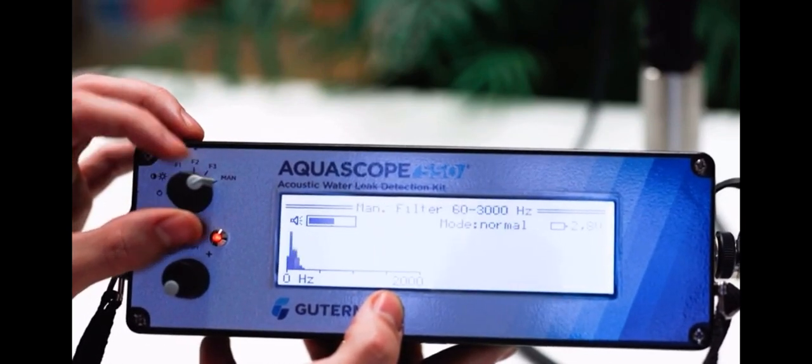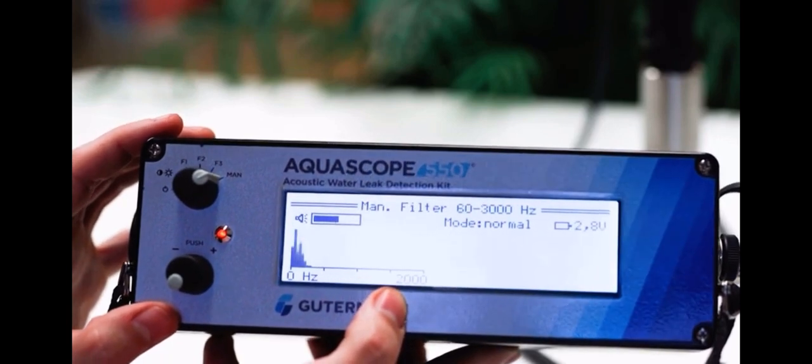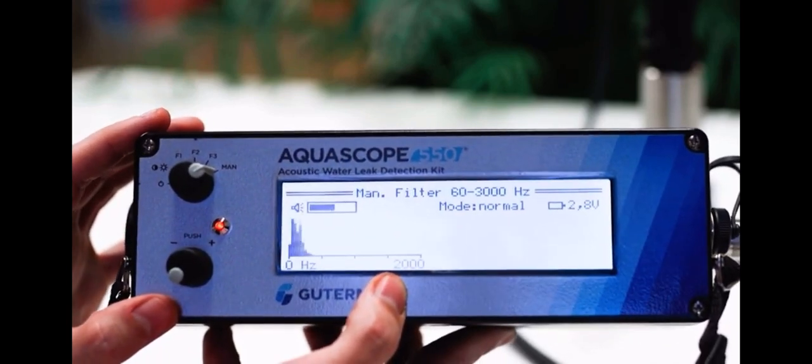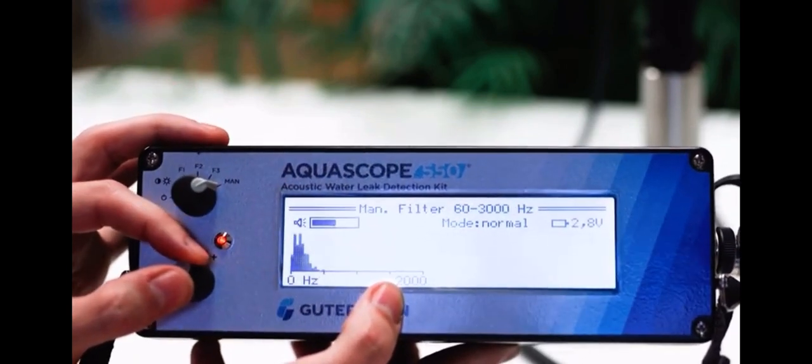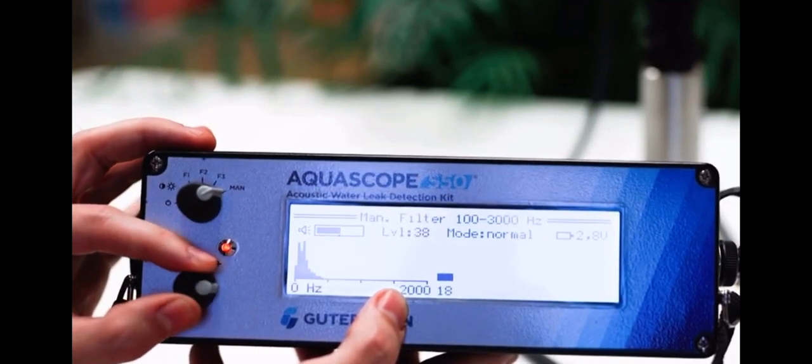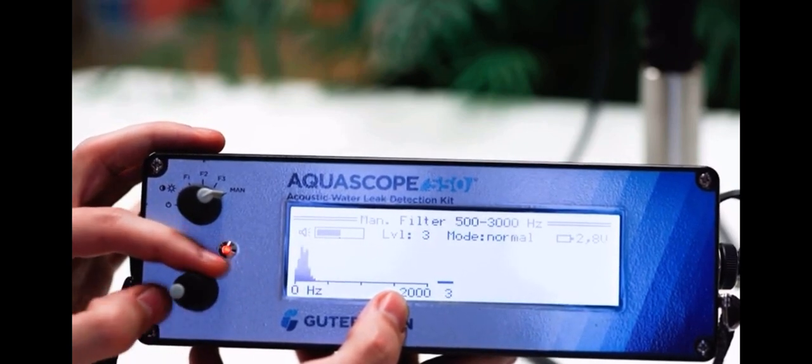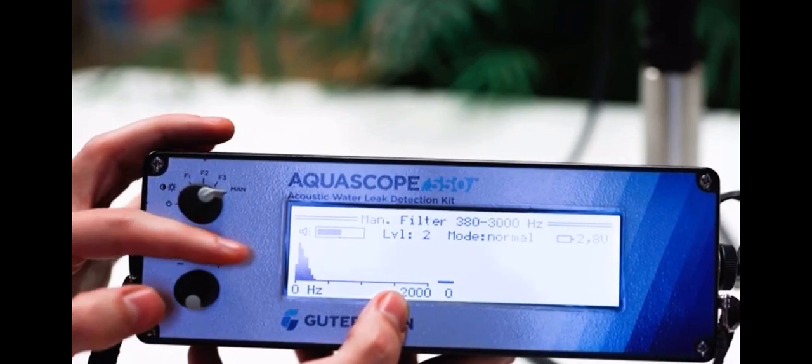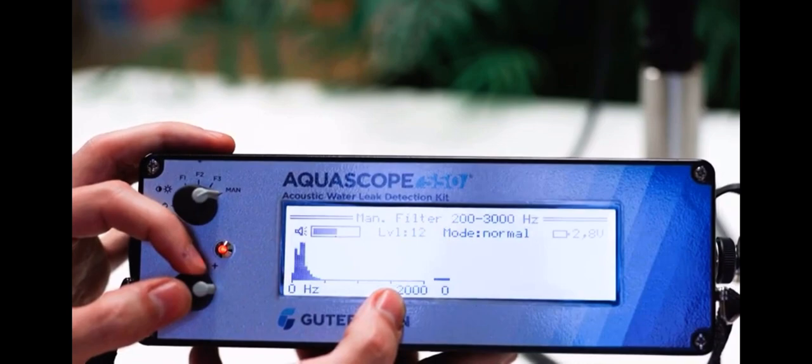Access the manual filter mode by rotating the top dial all the way to the right. On this screen, you can manually set the lowest and highest frequency of captured sound, as well as use frequency shifting to boost audible low-frequency noise, such as noise created by leaks on plastic pipe, into the range for human hearing.